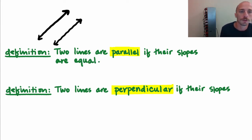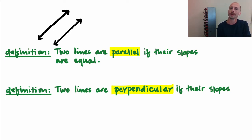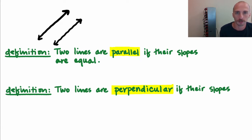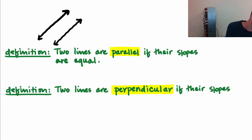Two lines are going to be perpendicular if their slopes are negative reciprocals of each other. A nice condition is if we take the slopes and multiply them together, they need to equal negative one for the lines to be perpendicular. So if their slopes multiply to negative one.